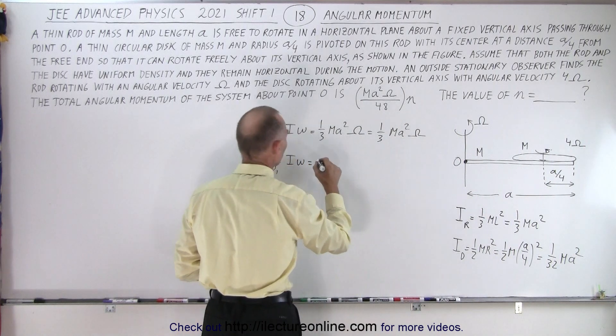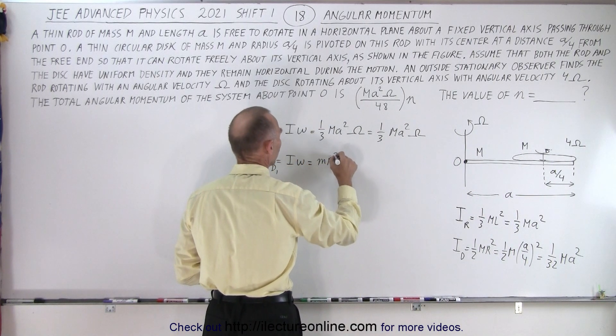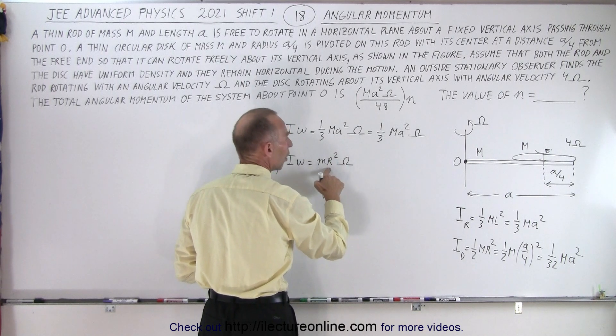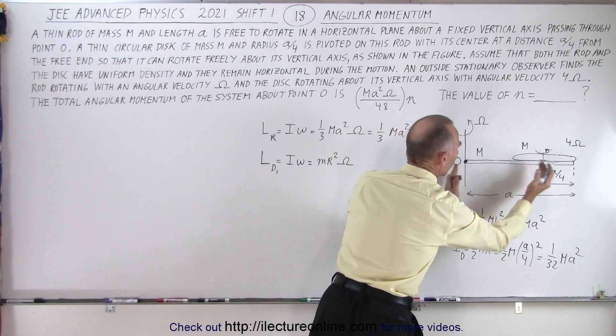So in this case, it's going to be m r squared times omega which is still omega like that. In this case, r is going to be 3 quarters a.